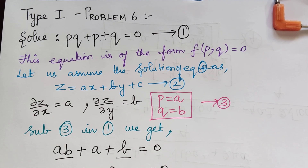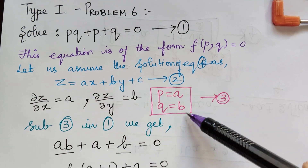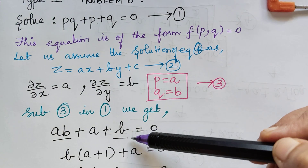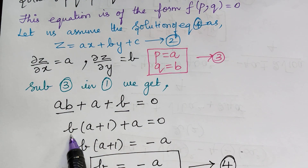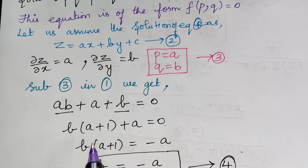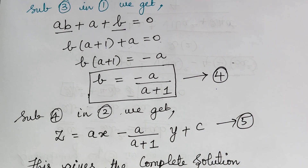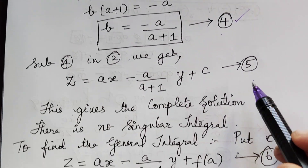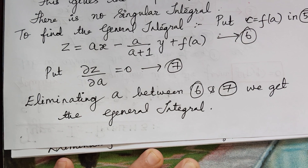Problem 6 is pq + p + q = 0, marked as equation 1. After substituting a and b, we get ab + a + b = 0. Taking b common from the first two terms gives b(a + 1) + a = 0, so b equals negative a divided by (a + 1), marked as equation 4. Substituting in equation 2 gives equation 5, the complete solution. There is no singular integral, and the general integral is obtained as before.